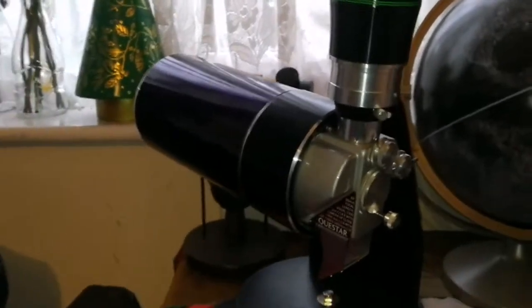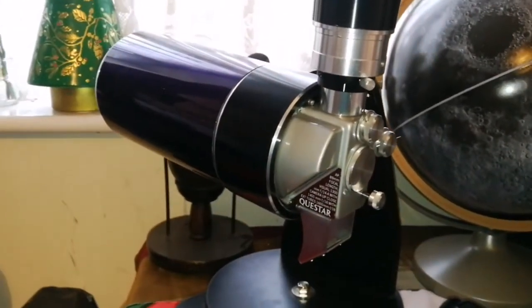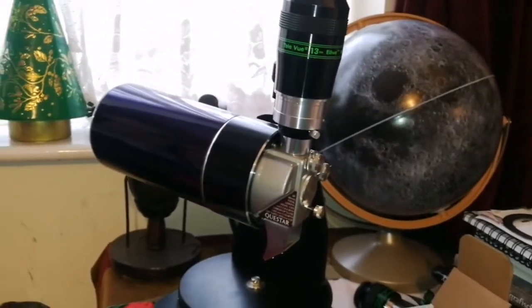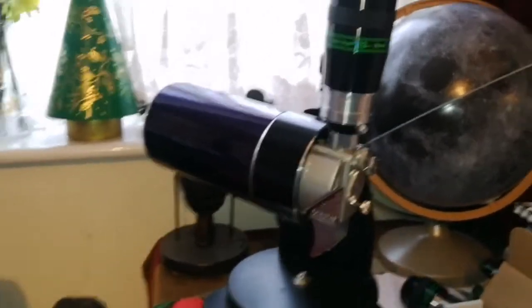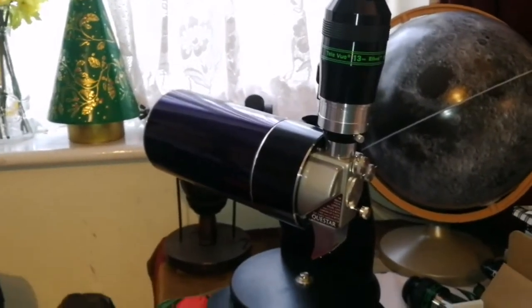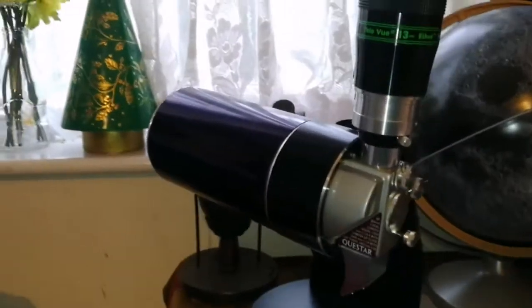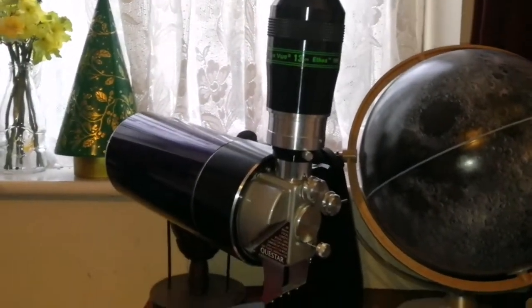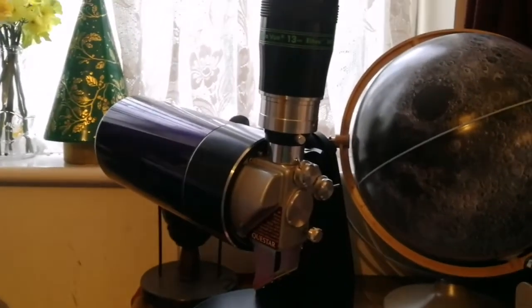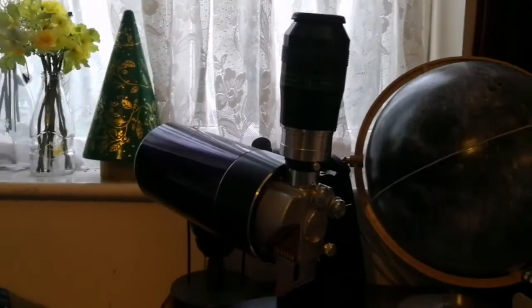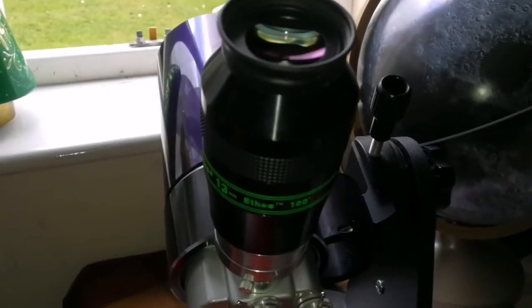Yeah, and this Dobsonian mount is strong enough to hold it in its place. That's a big improvement. Now we have the Ethos 13 on the Questar. Amazing. Let's see how it looks.